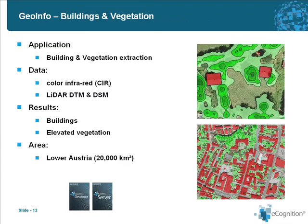Finally, there's the example of the Lower Austrian government, which is extracting general land cover — buildings and vegetation — based on color infrared data and LIDAR. The extracted classes are buildings and elevated vegetation polygons. This was produced for the whole area of Lower Austria using eCognition Developer and Server, and this example is one that will now be presented in more detail to show how the analysis is actually performed using our software.